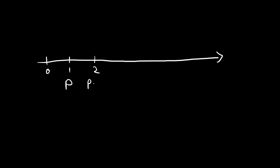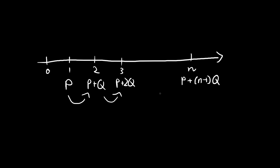Let us consider a varying annuity. Let me draw a timeline. Consider this payment scheme: at time 1, we receive P dollars; at time 2, P plus Q dollars; at time 3, P plus 2Q dollars. This goes on to time N, where we get P plus (N minus 1)Q dollars. All these payments increase as an arithmetic sequence. The problem is: what is the present value of all these payments?